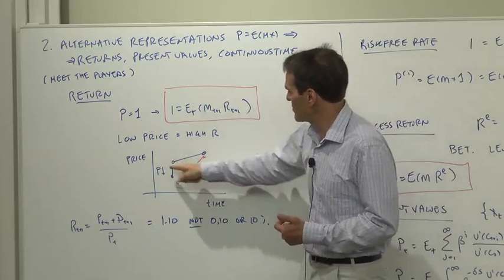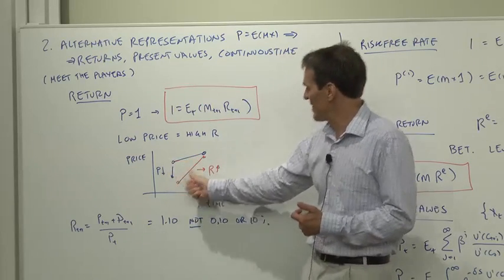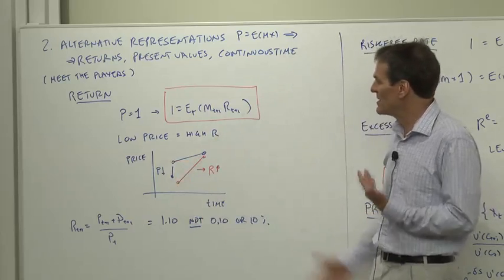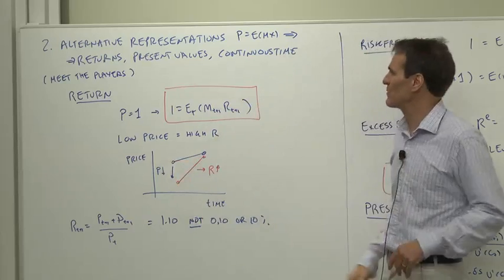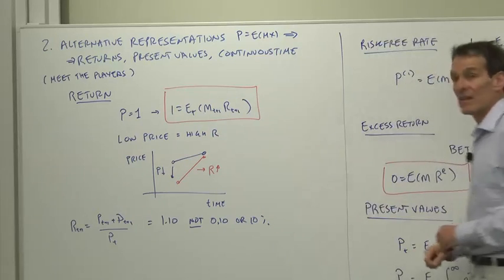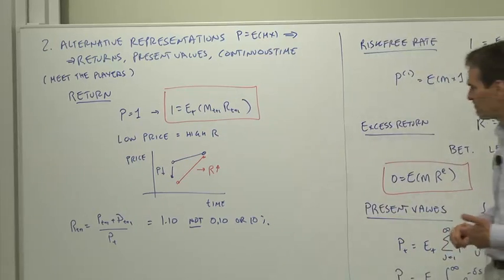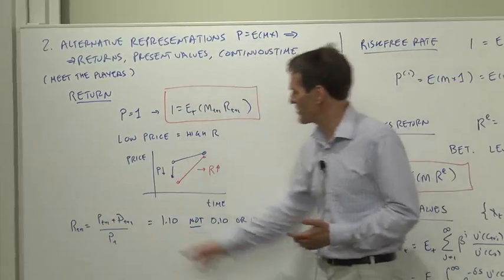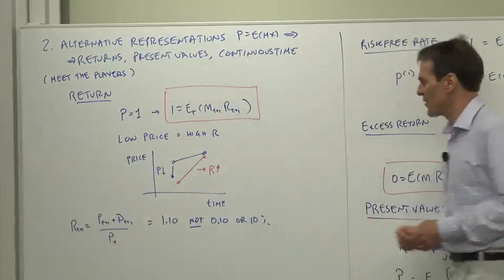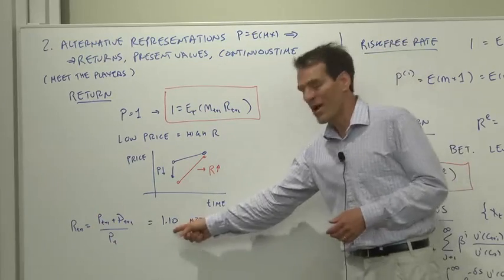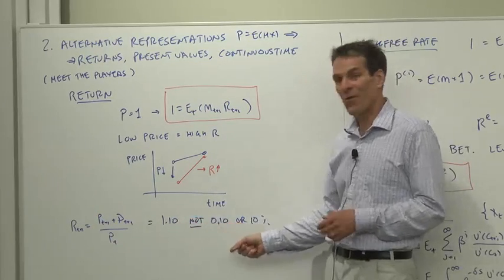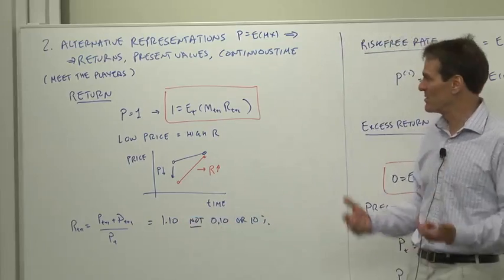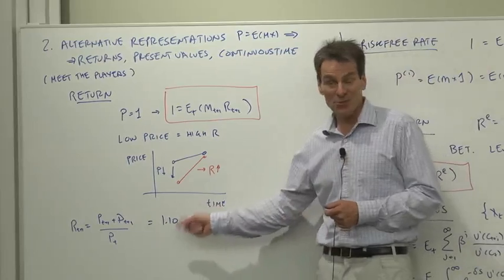A low price today is the same thing as a high return from today till tomorrow. If you have a security whose price is driven down today, that's the way that it gets a high expected return from today until tomorrow. So this equation is still determining returns in the same way that that equation determines the prices. The return concept that we're using here, capital R, is a gross return, price plus dividend over initial price. It's a number like 1.1, not a number like 0.1 or 10% or annualized. When you deal with data, make sure that you're using the right set of units.